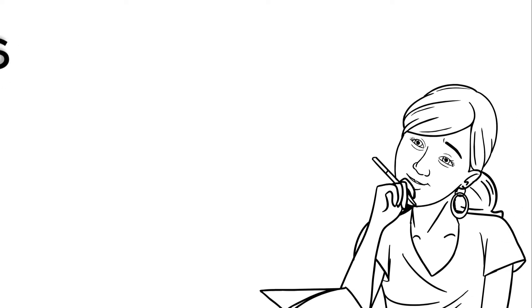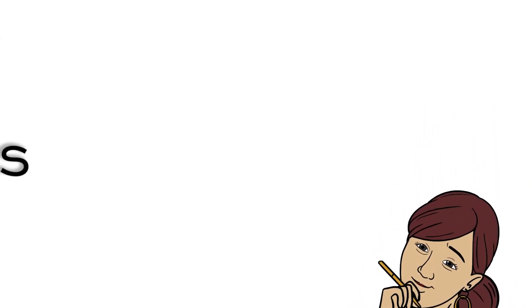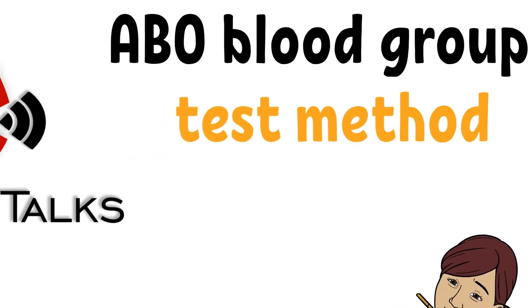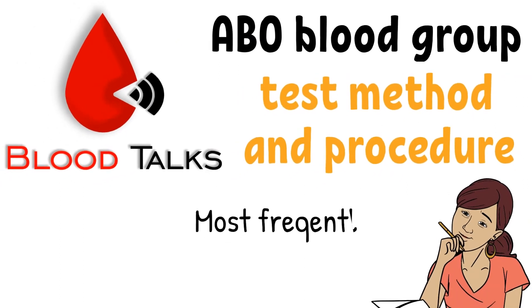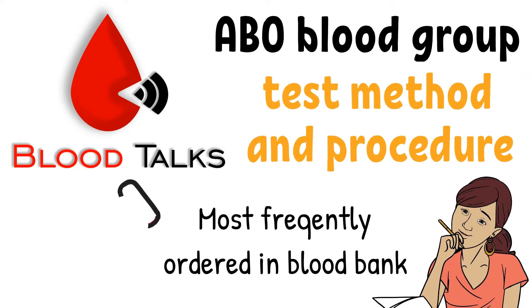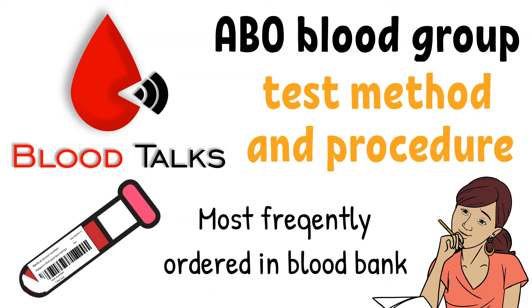Hello Blood Talk fans! Today we are still on the topic of transfusion medicine, or blood bank. However, it's not all boring theory today. I will walk you through how we actually perform ABO testing manually using two methods in the laboratory. ABO and Rh blood groups are the most basic and most frequently ordered tests in blood bank. I talked about ABO blood groups in depth in another video already — I will leave a link in the description box below. Today we will be focusing on testing methods and procedures for ABO typing.